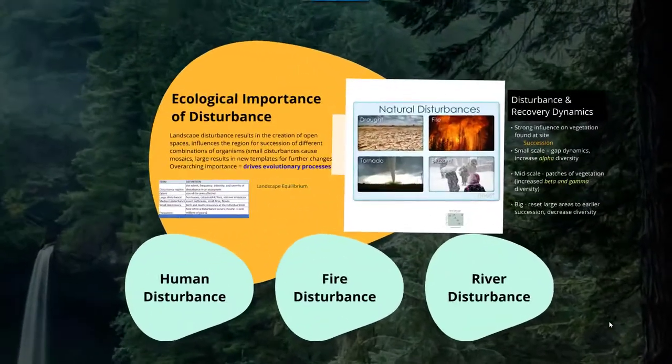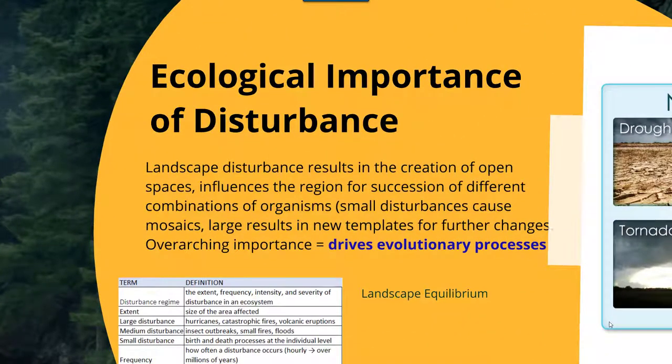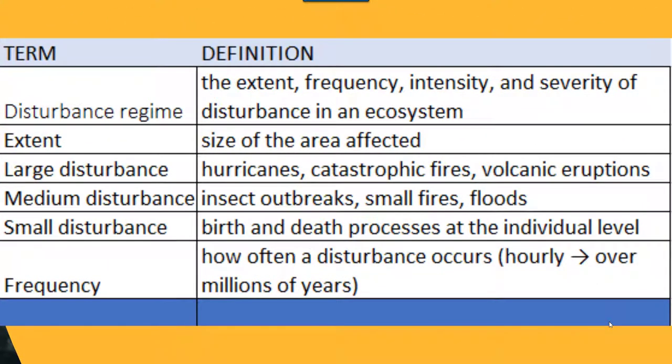Finally, we touch on disturbance. Disturbance is ecologically important because landscape disturbance results in the creation of open spaces, can influence succession, and affects different combinations of organisms existing within these ecosystems. Ultimately it drives evolutionary processes as well. Important terms here are small, medium, and large disturbances. Small disturbances consist of birth and death processes at the individual level. Medium disturbances include insect outbreaks, small fires, or floods. Larger disturbances are ones we typically think of as more catastrophic, such as hurricanes and volcanic eruptions.